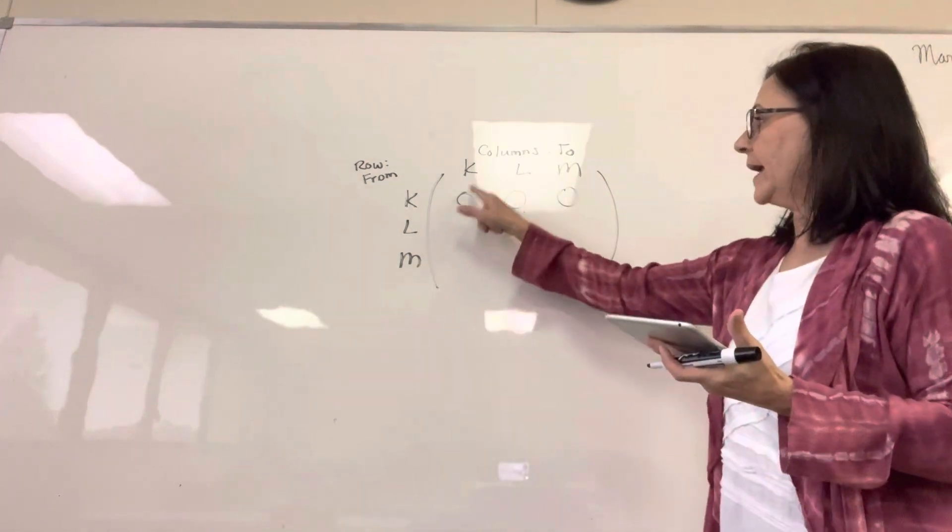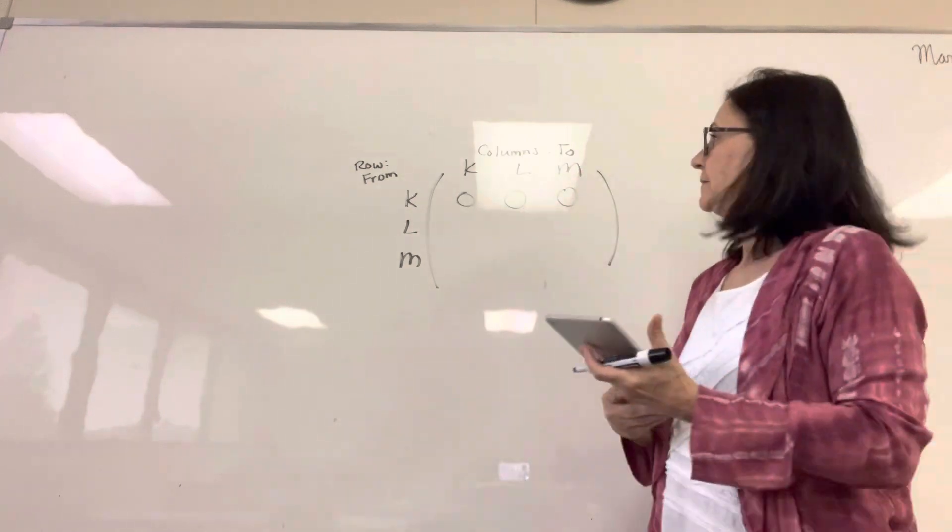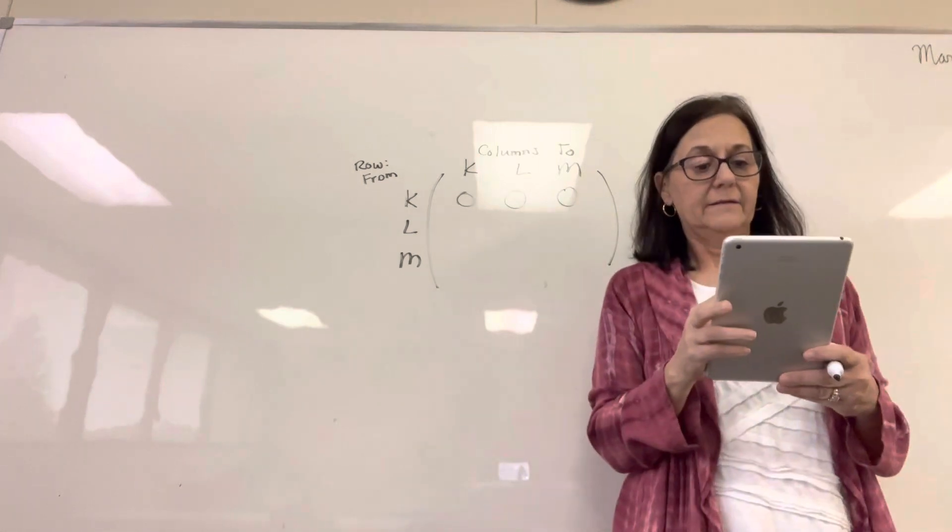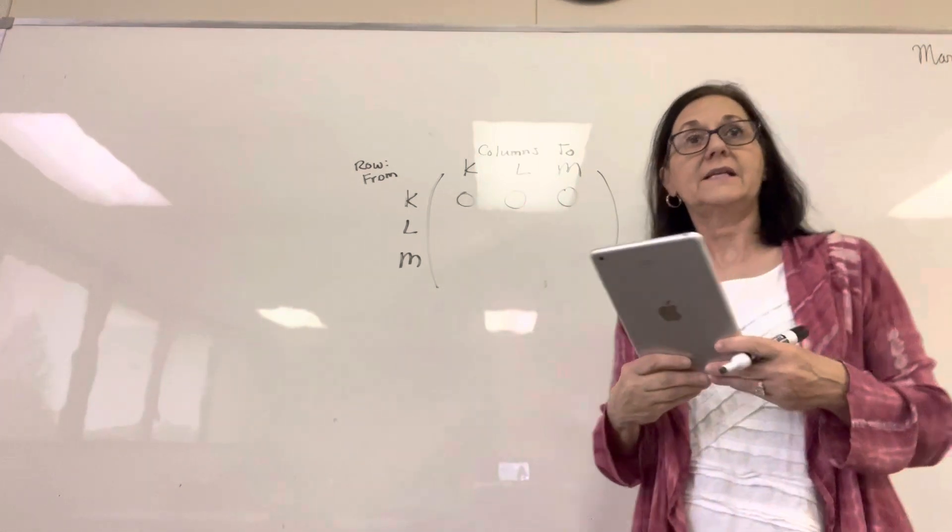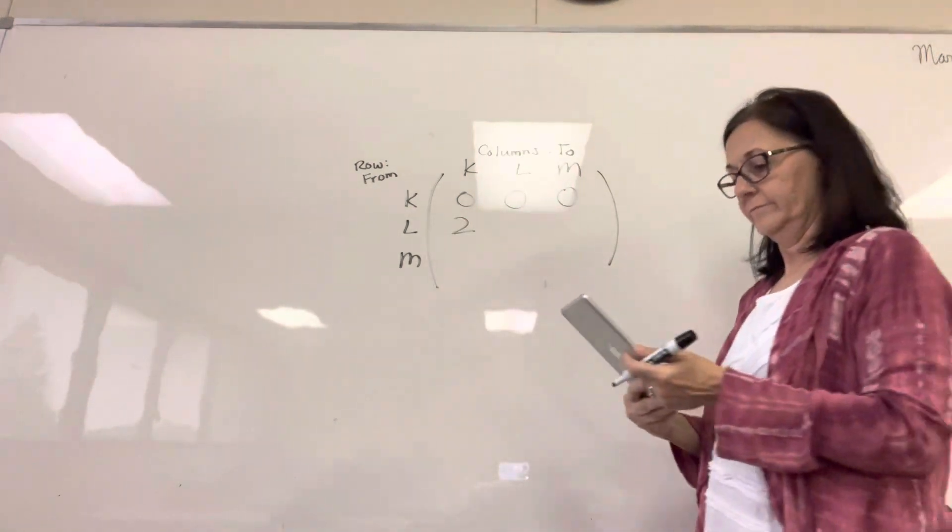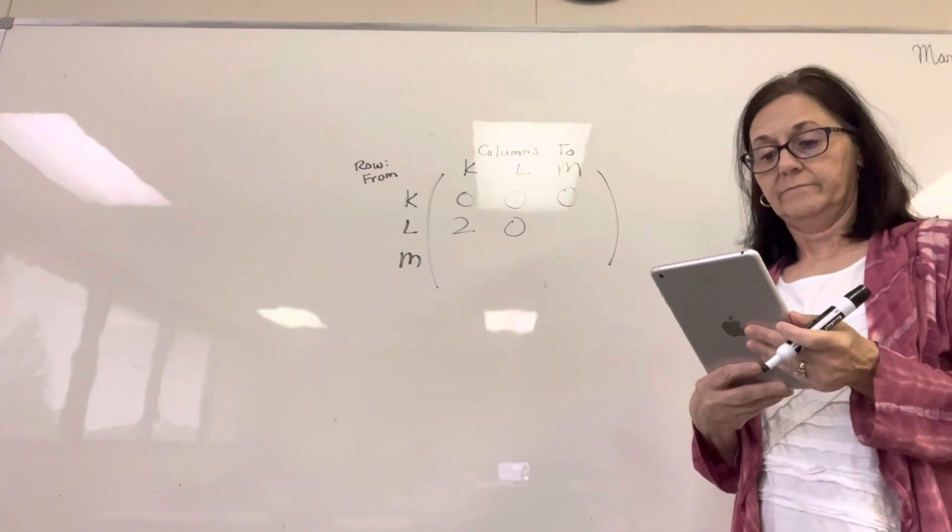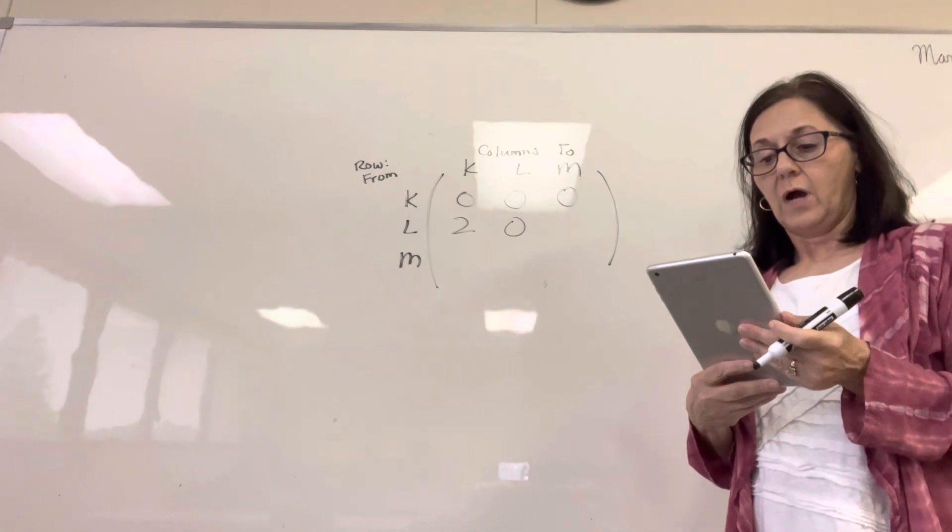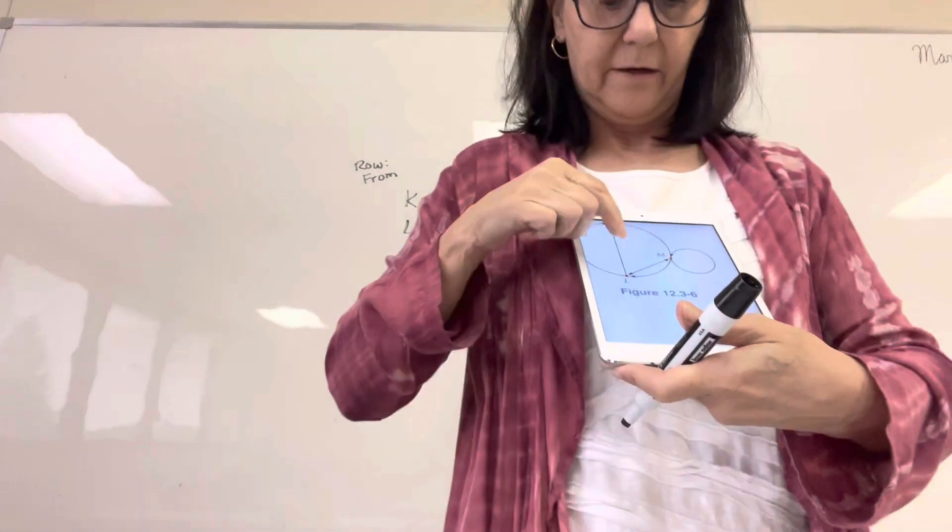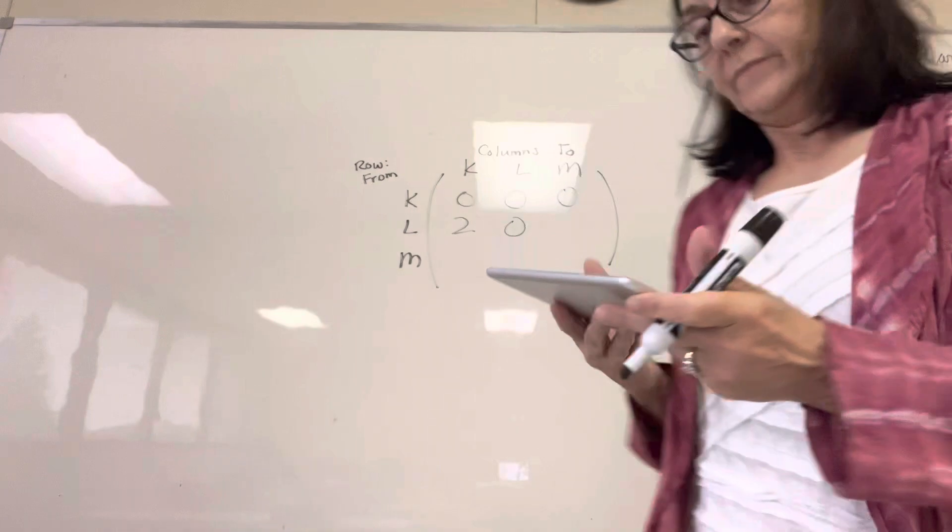Now we're going to go from L to K, L to L, L to M. Make sense so far? This is not rocket science. L to K, one, two. I see two. Everybody else see two? L to L, I don't see any. L to M, I think I see one. Here's the one I see right here. This goes from L to M and M to L. So one.